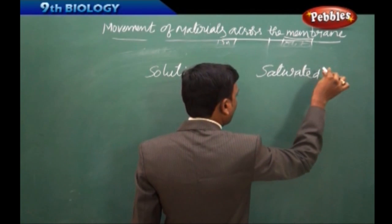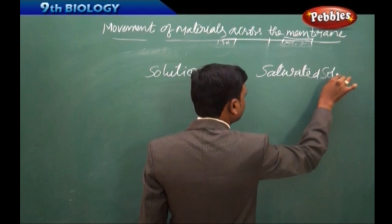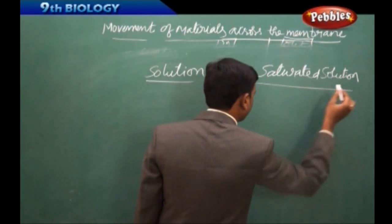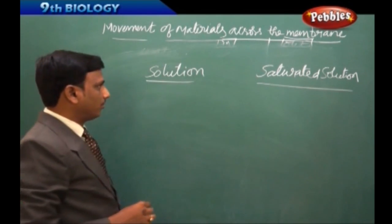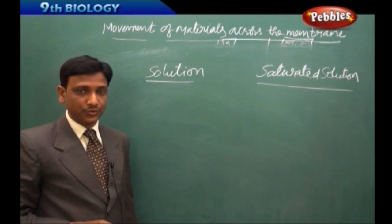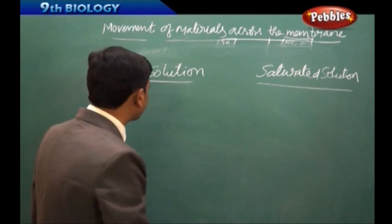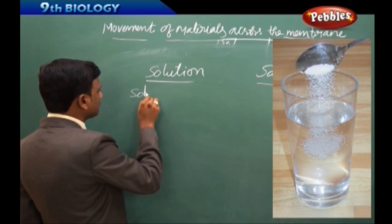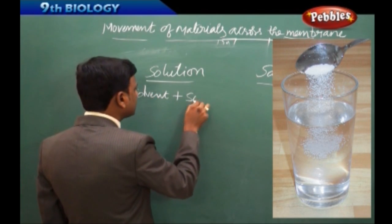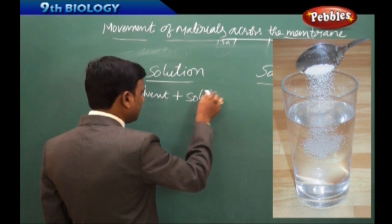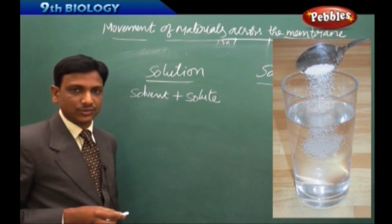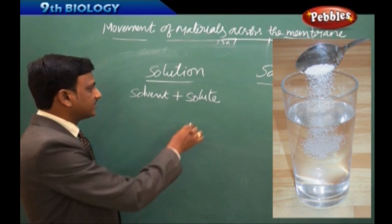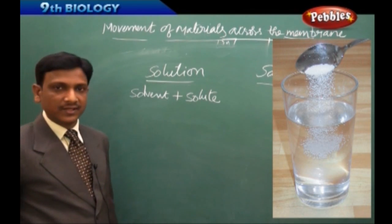What are a solution and a saturated solution, and how do we prepare them? You might have studied how to prepare a solution in your chemistry lessons. To prepare a solution we need two things: one is a solvent and the other is a solute. The solvent is typically a liquid present in large quantity, and the solute is dissolved in it to make a solution.